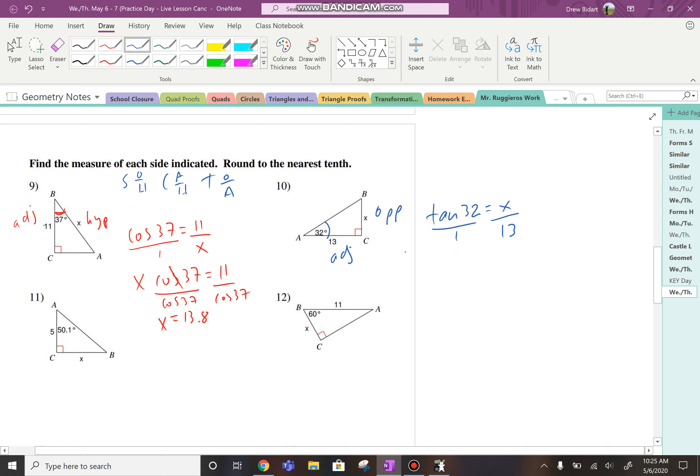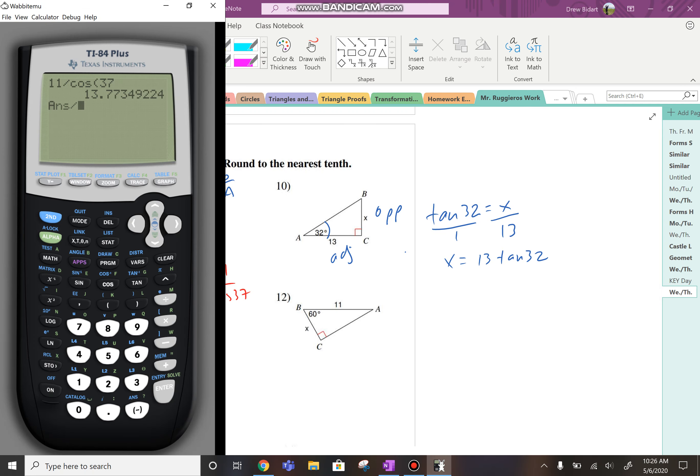So this time when you cross multiply, X times 1 is X, and we write that as 13 tan 32. So 13 tan 32, and that should be about 8.1.